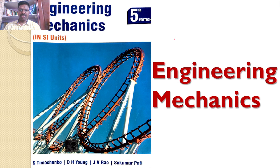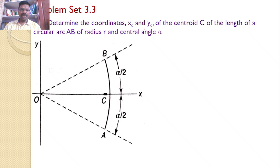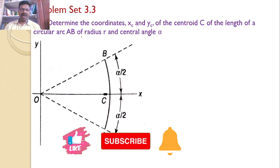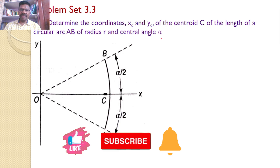Welcome to RK Tutorials, Solutions to Engineering Mechanics by S. Timoshenko, 5th edition. In this tutorial, we will discuss problem set 3.3 and problem number 3.31: Determine the coordinates XC and YC of the centroid C of the length of a circular arc AB of radius R and central angle alpha.